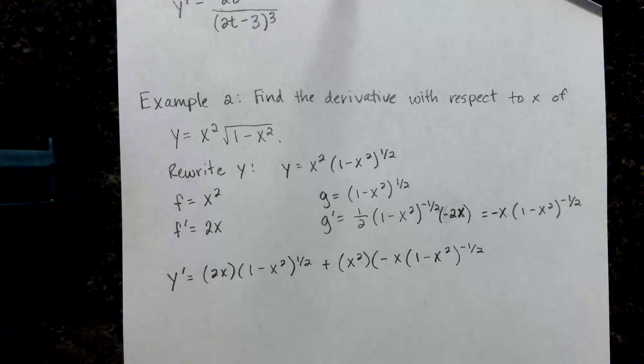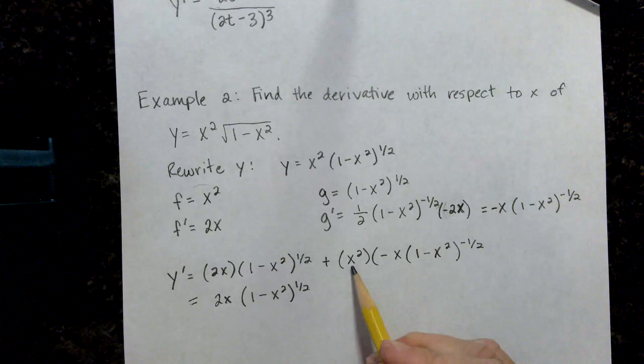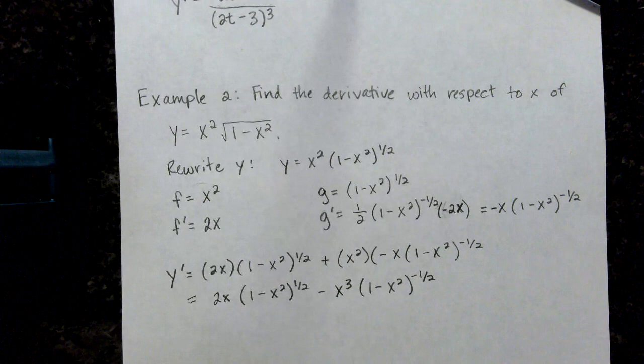I always think it's a good idea to simplify here if I can. So I see that I have 2x. I can't distribute that because of the exponent of 1 half. And then I can see x squared times negative x is negative x cubed and 1 minus x squared to the negative 1 half.